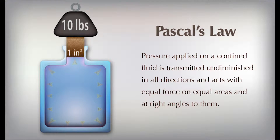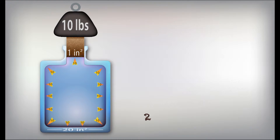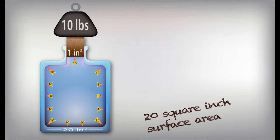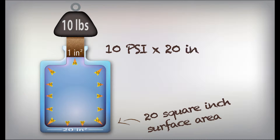this results in a 10-pound force on every square inch of surface area in the container. If the bottom of the container has a surface area of 20 square inches, and each square inch gets 10 pounds of force, the entire bottom of the container receives a 200-pound push.